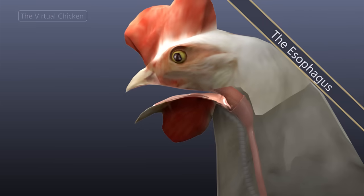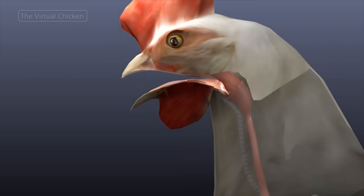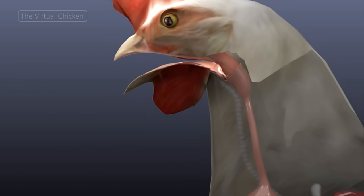The esophagus of a chicken is a thin-walled, expansive tube that transports food from the mouth of the pharynx to the stomach.